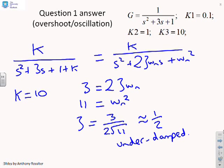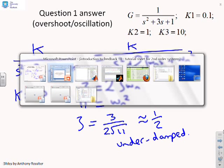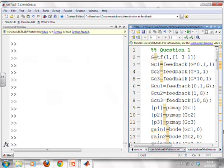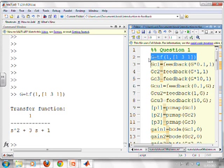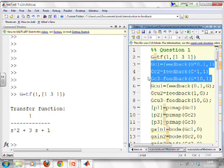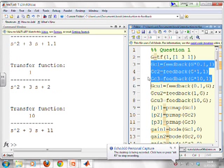So having done the algebra, let's go to MATLAB now and see if we do get the sorts of solutions that we've derived on pen and paper. So first, let's enter the transfer function. There you can see it, 1 over s squared plus 3s plus 1. Generate the closed loop transfer functions for the three different Ks.